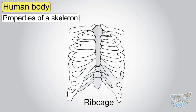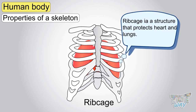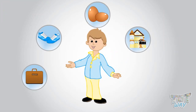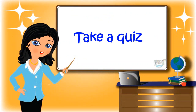Our rib cage is like a strong cage for delicate organs like the heart and lungs. So kids, nature has provided the best materials for our body, and we have learned how structures are all around us and help us in our daily life. Now go ahead and take a quiz to learn more. Bye-bye!